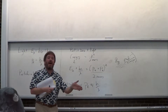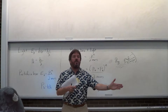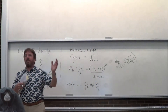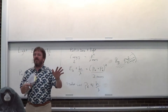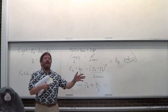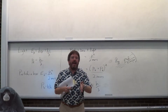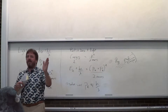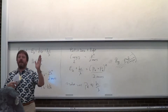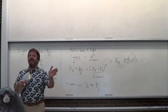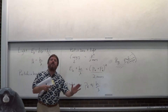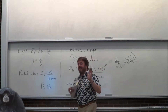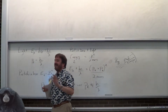It knows ahead of time that if it bounces off this way, it's going to be annihilated and it can't do that. So it never does it to begin with. That's what quantum mechanics does — it does crazy stuff like that.